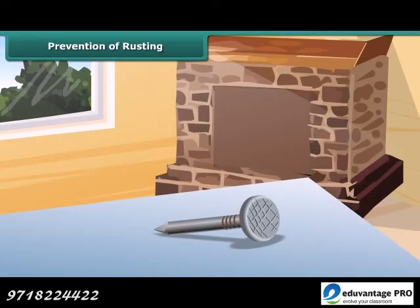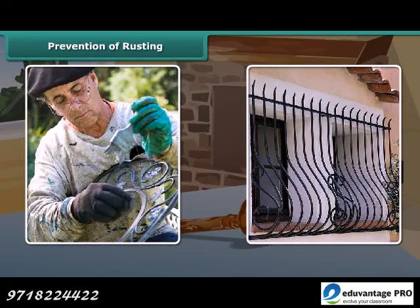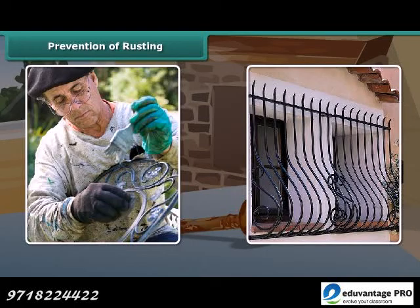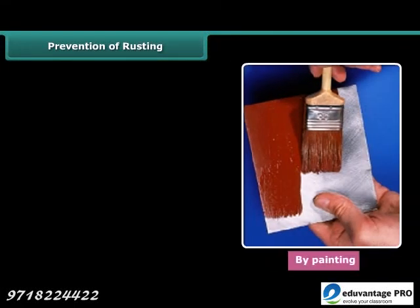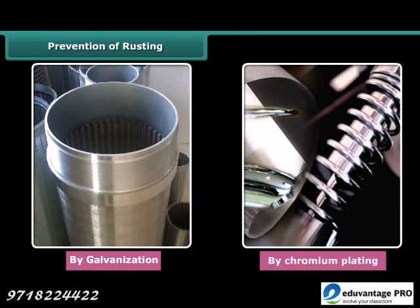Rusting slowly destroys iron articles. You may have seen that paint is applied to iron grills of windows and balconies to prevent the formation of rust. We can prevent rusting by preventing iron articles from contact with moist oxygen or water. This is accomplished by painting, applying grease or oil, depositing a layer of zinc on iron — also called galvanization — and by chromium plating.